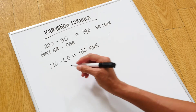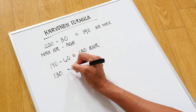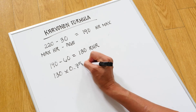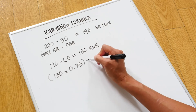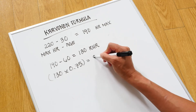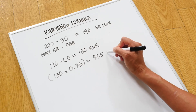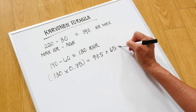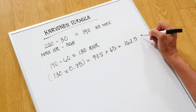Now, to get our target heart rate, I'm going to take that 130 and multiply it by our maximum intensity, which for this is going to be 0.75. That gives me 97.5, and then I'm going to add 65 to that, getting 162.5 beats per minute.